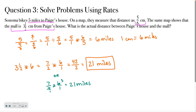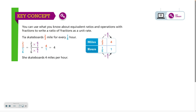For this problem, hopefully your work shows that one centimeter equals six miles. Then using that information, you multiply three and a half centimeters times six to find that the actual distance between Paige's house and the mall is 21 miles. If you have questions, please reach out — I'm happy to help. You can also find the key concept page here, which summarizes everything you need to know for the lesson. Have a great day.